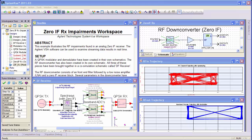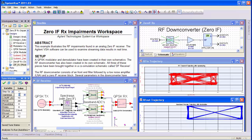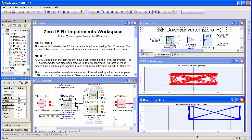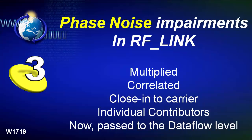I can also add some gain imbalance and some phase imbalance of a few degrees and watch the impairments accumulate. That brings up the next improvement in Spectrasys: the Spectrasys phase noise impairments now propagate up to the system level in RF link.